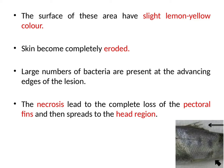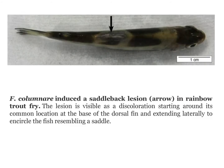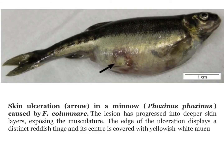Here you can see a Flavobacterium columnare-induced saddle back lesion, shown by arrow in a fish. The lesion is visible as a discoloration starting around its common location — at the base of the dorsal fin — and extending laterally to encircle the fish, resembling a saddle.